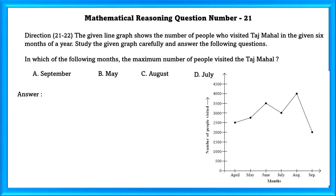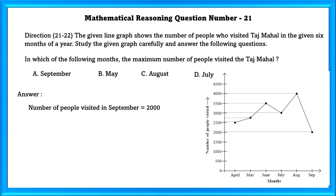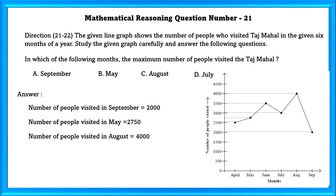Mathematical reasoning question number 21: The given line graph shows the number of people who visited the Taj Mahal in six months of the year. Study the given graph carefully and answer the following question: In which month did the maximum number of people visit the Taj Mahal? Number of people visited in September is 2000, May is 2750, August is 4000, and July is 3000. As we can see, August has the maximum number of people.